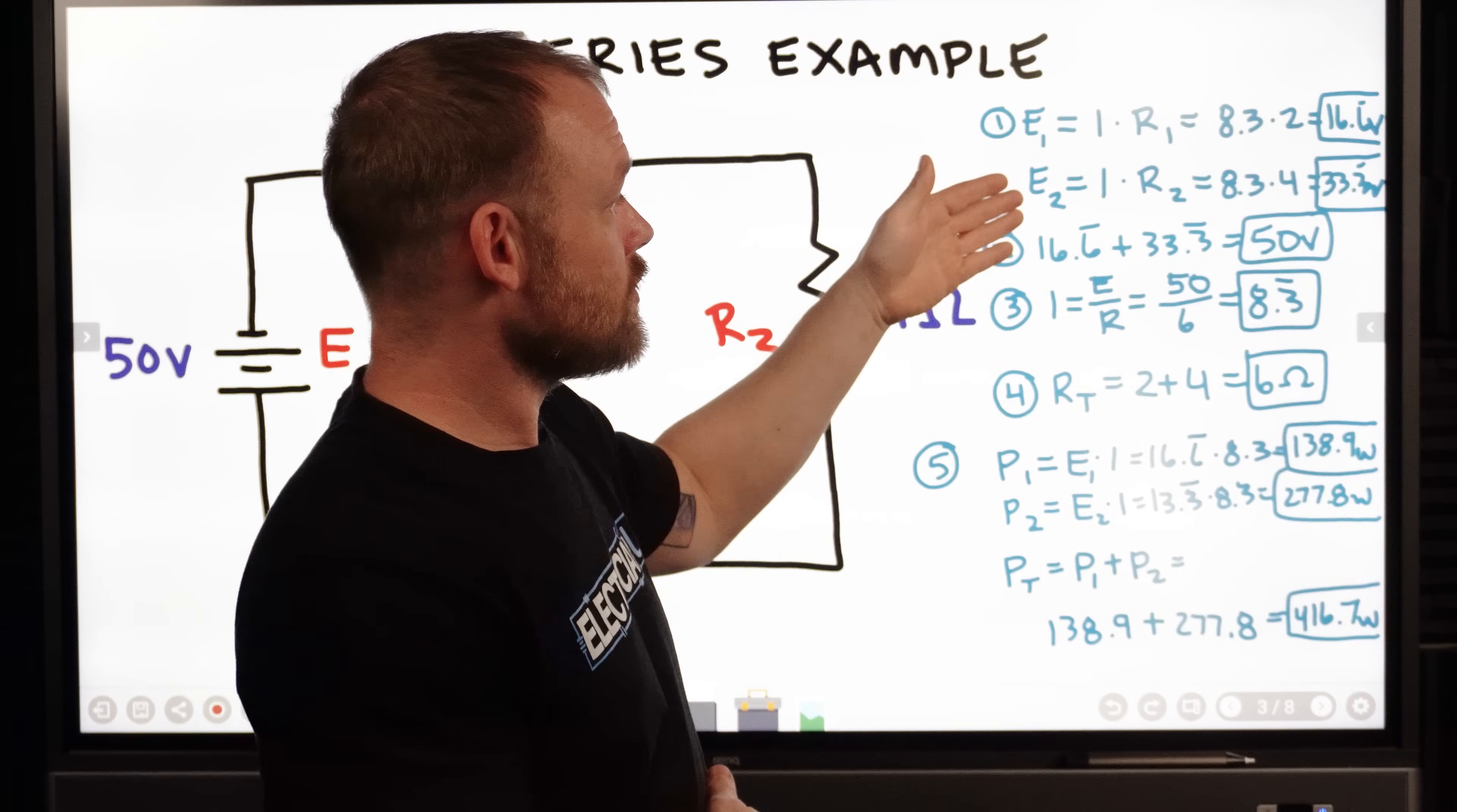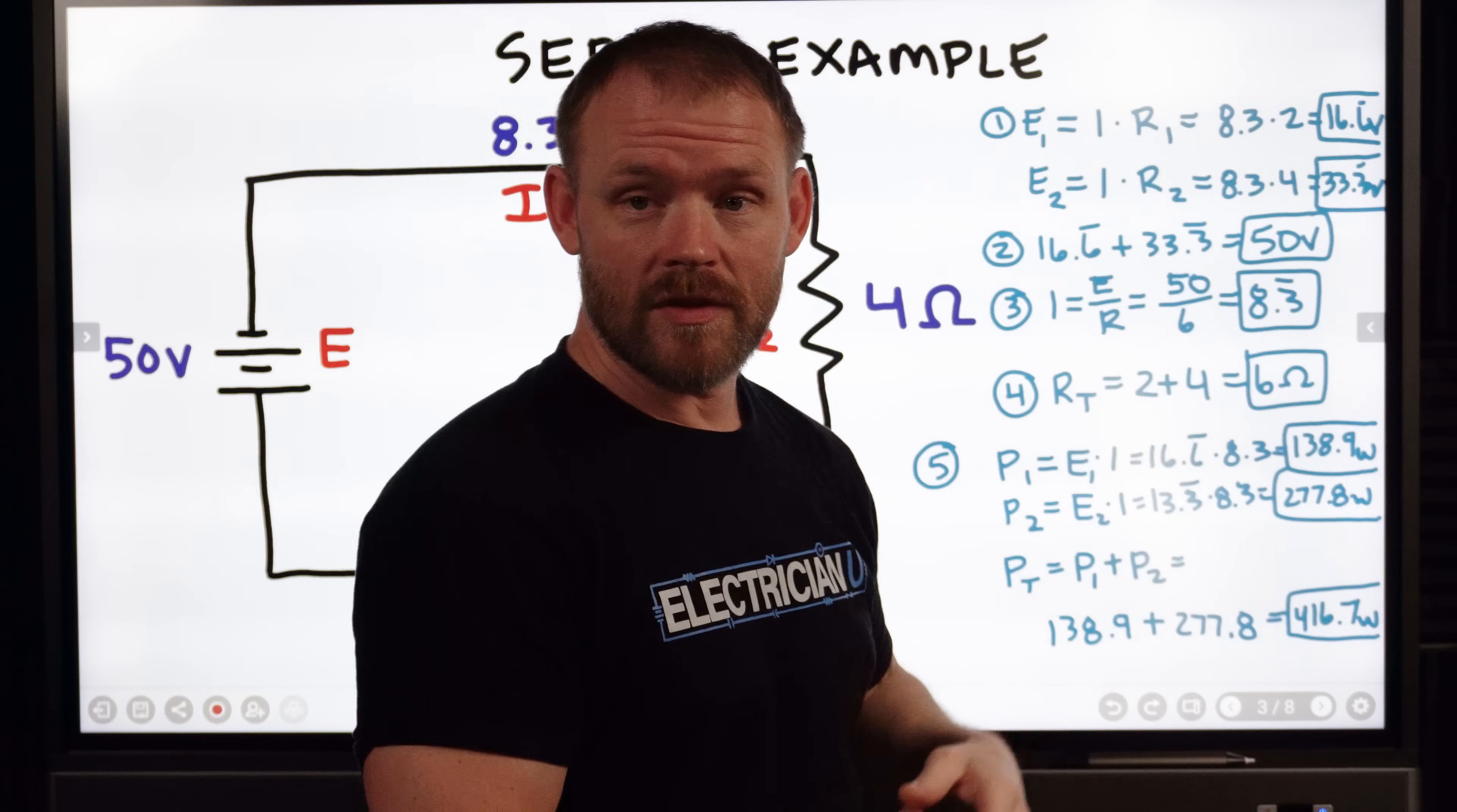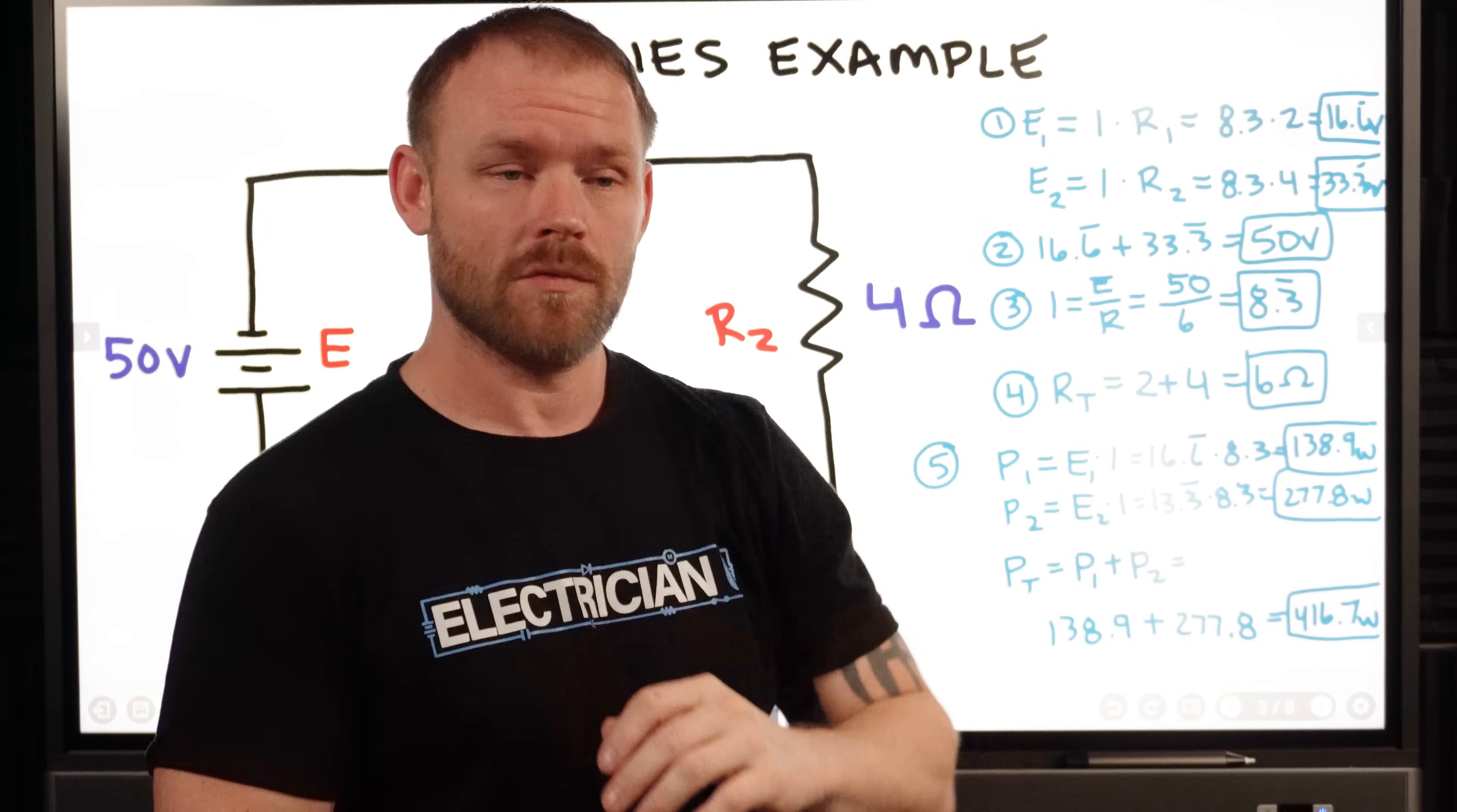So that gives us the voltage drop across each one. Now the next thing to do is you want to take those two voltage drops and ensure that the math points to the voltage source being the same as both voltage drops. So if we take 16.6, our first voltage drop for R1, and we take 33.3, our second voltage drop for R2, we should get 50 volts. And because the math is silly on a calculator, 0.6 repeating and 0.3 repeating, you're going to get 49.99999999. It's 50 volts. So that matches. The math checks out, and Kirchhoff's voltage law is proven. So that's all voltage stuff with series circuits.